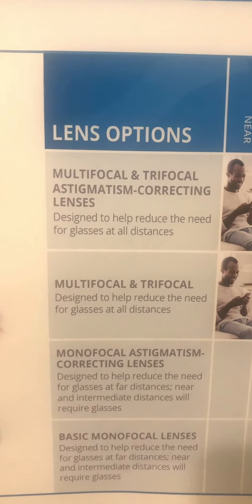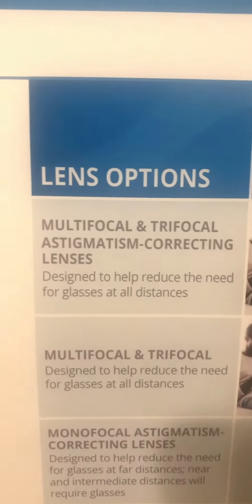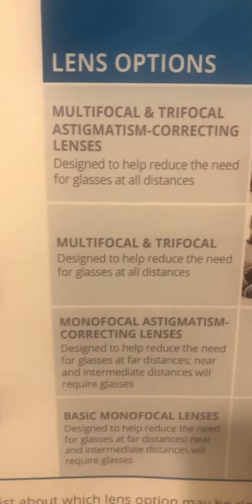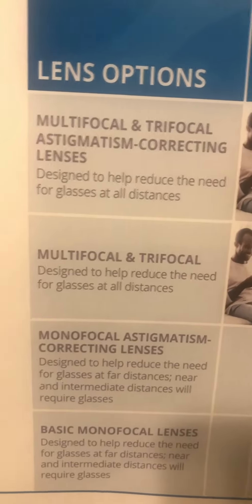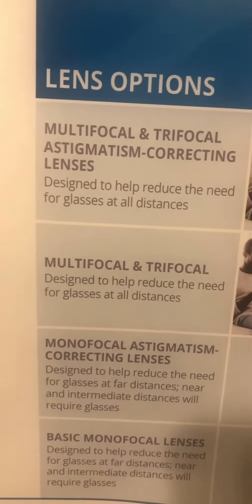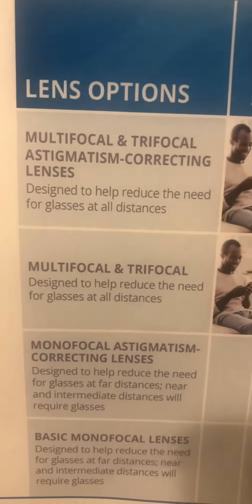The first option is a multifocal or trifocal astigmatism-correcting lens, which will help with pretty much all ranges of vision — near, distance, and intermediate — as well as astigmatism correction. The second type of lens option is multifocal or trifocal without astigmatism correction.